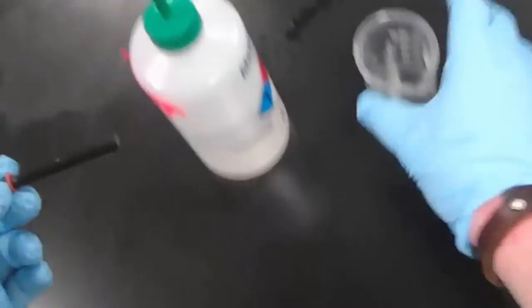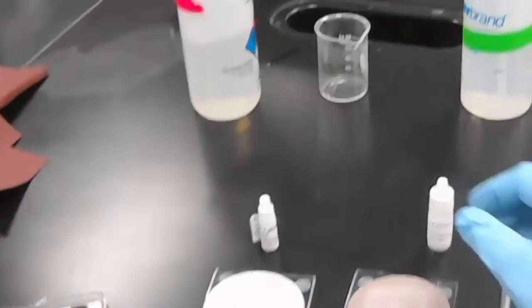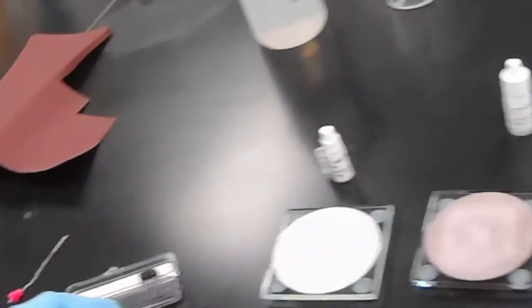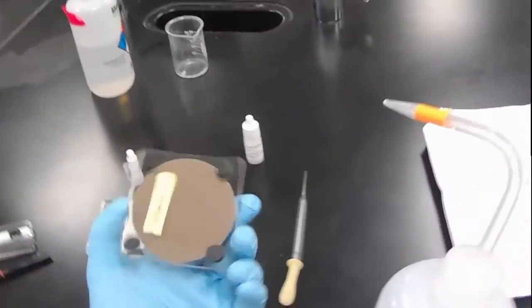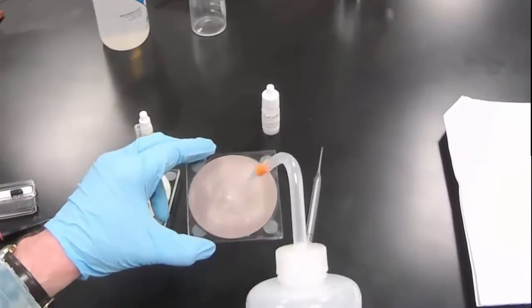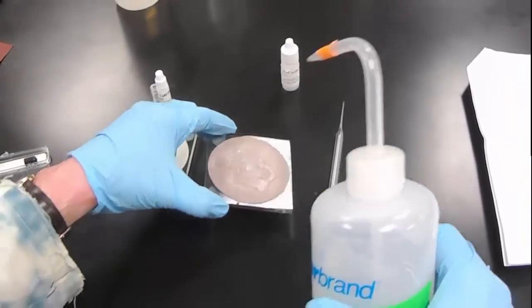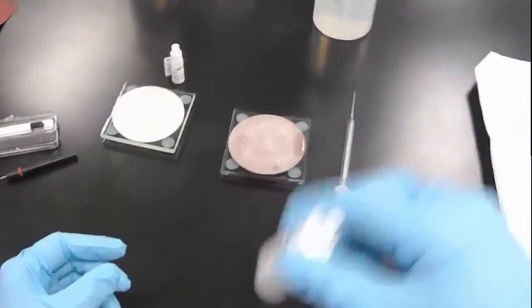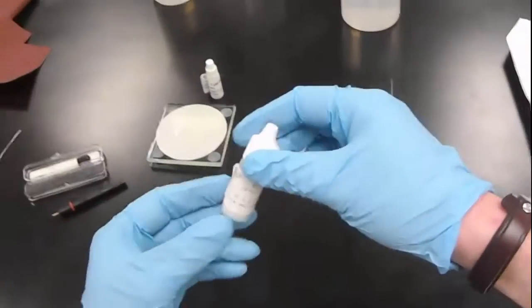And we're ready for the next stage in the polishing, which is the alumina powder. We're going to do the same thing. We're going to get this cloth pad wet with millipore water.